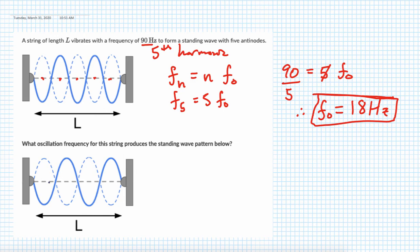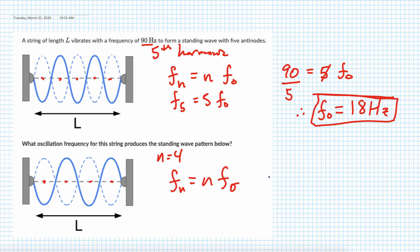Once you know the fundamental, you can figure out anything else. Down here we want to know what frequency produces a certain wave pattern. Counting the antinodes gives us four harmonics. So the frequency of the fourth harmonic equals 4 times the fundamental of 18 Hertz, which gives us 72 Hertz.